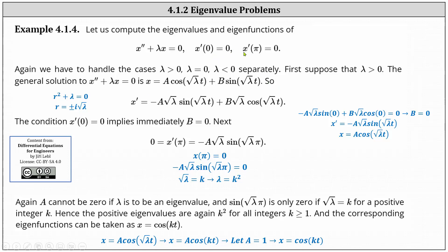Because we have x prime of 0 equals 0 and x prime of pi equals 0, we now need to find x prime, which is the derivative of x with respect to t shown here. Notice this does require the chain rule. Now we use the condition x prime of 0 equals 0. We substitute 0 for t into x prime and set it equal to 0. This gives us negative a square root lambda sine 0 plus b square root lambda cosine 0 equals 0. We know sine 0 is 0 and cosine 0 is 1, which indicates the equation is only true when b equals 0.